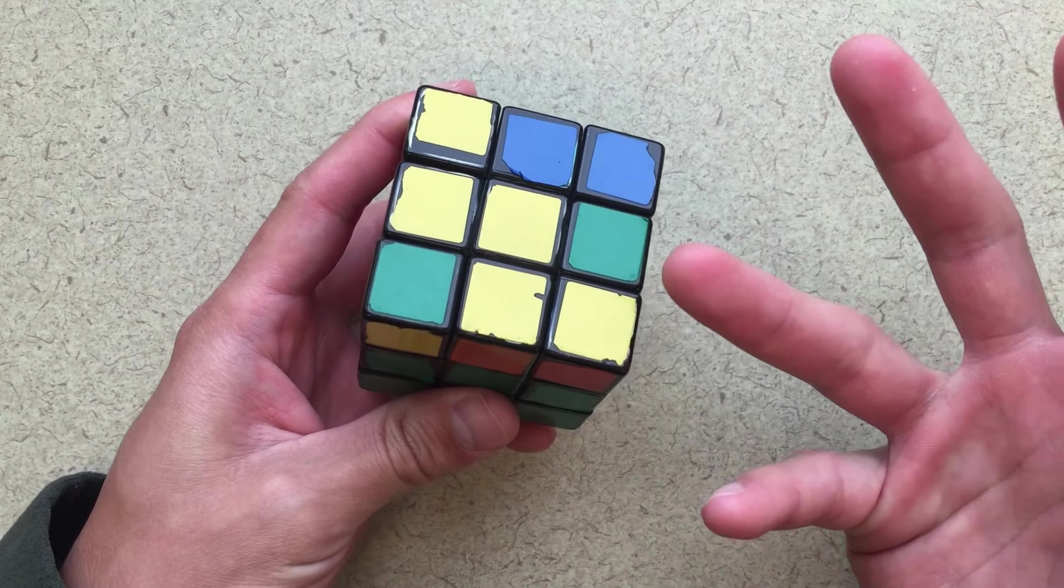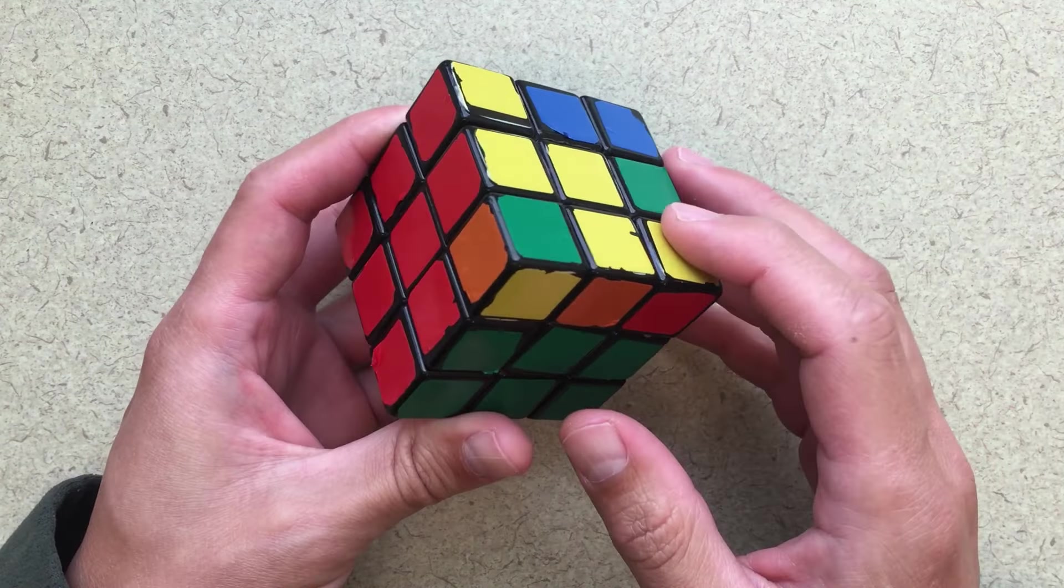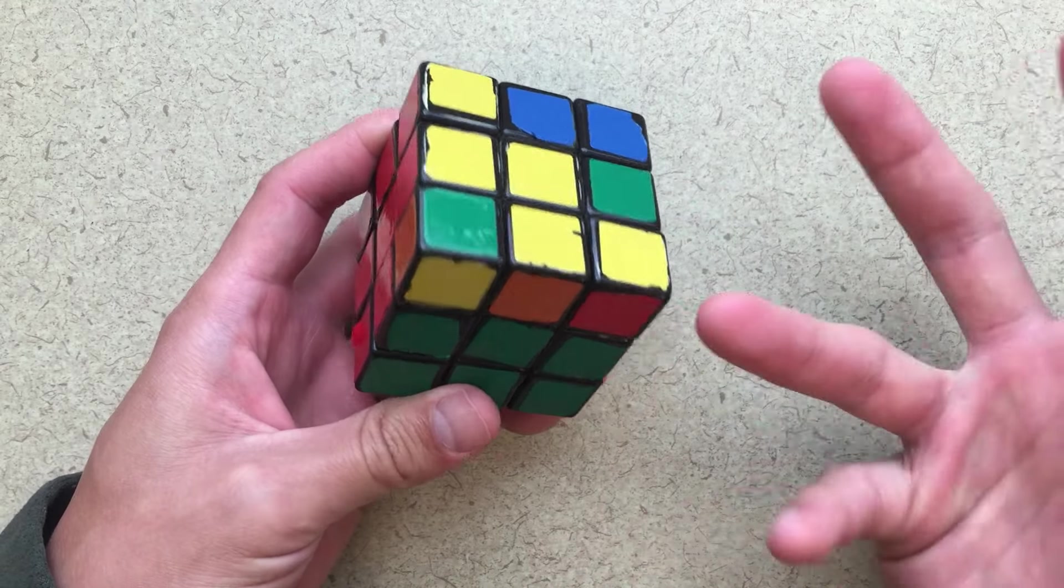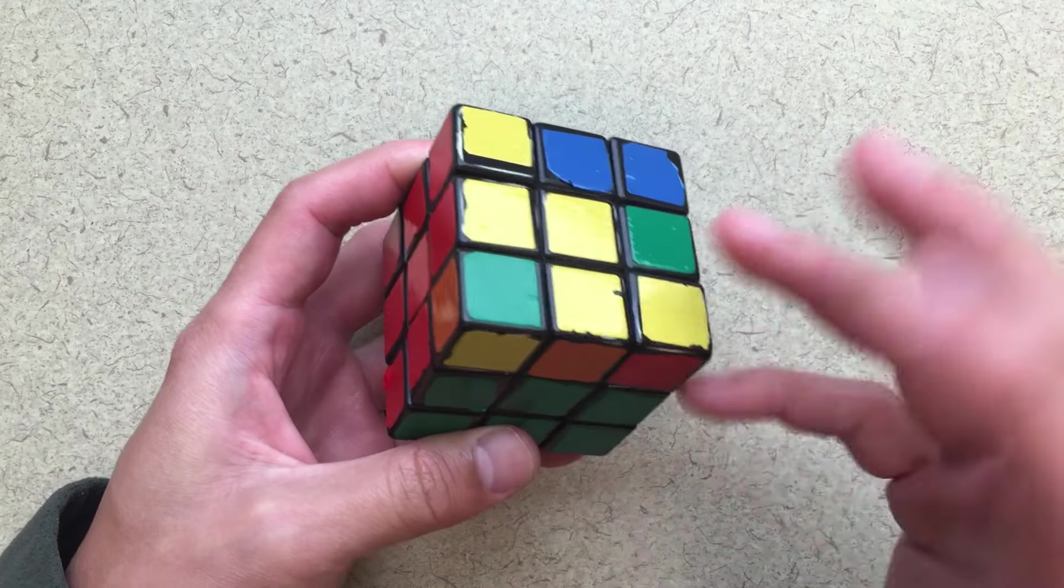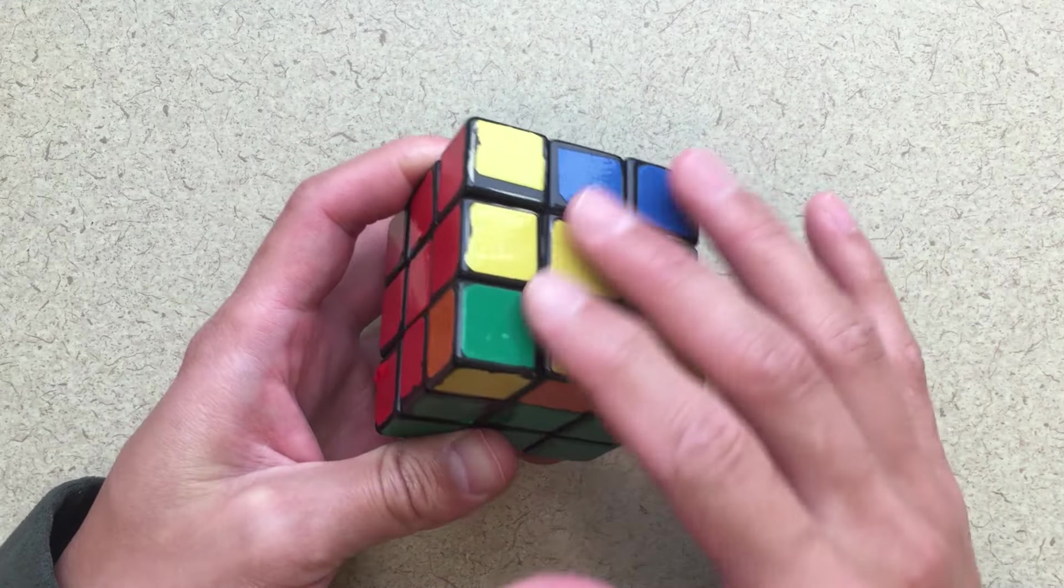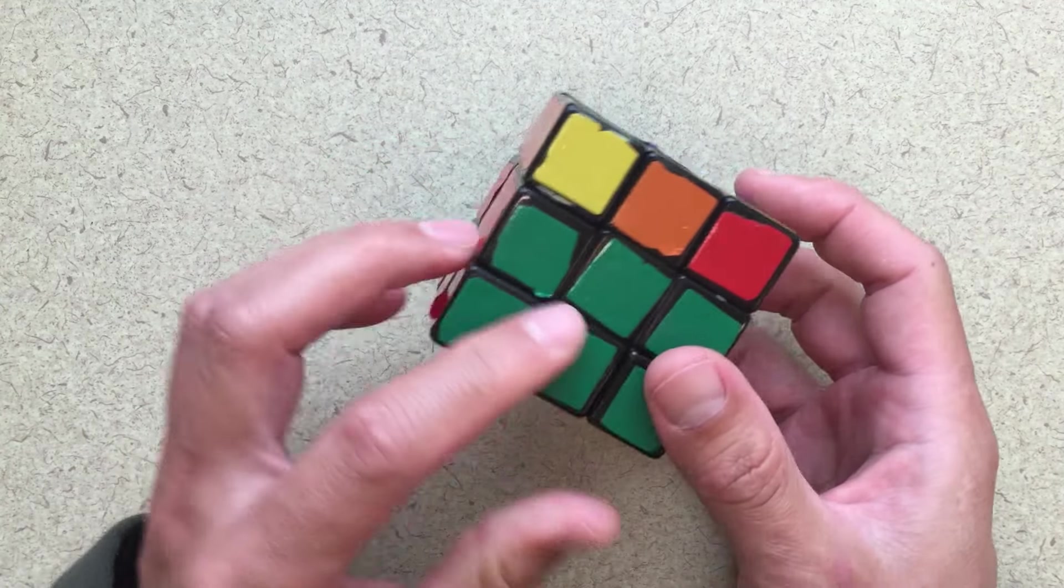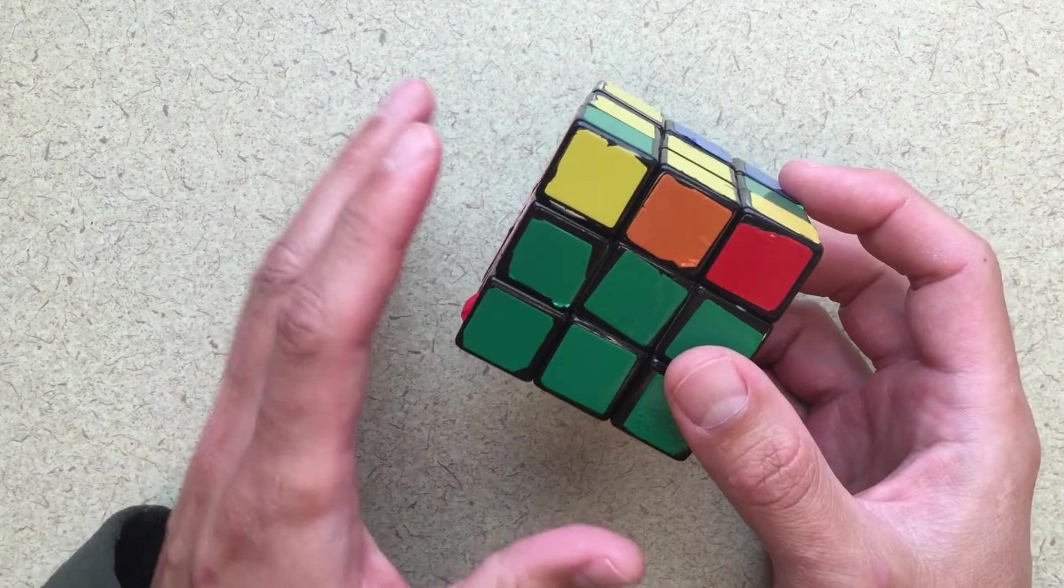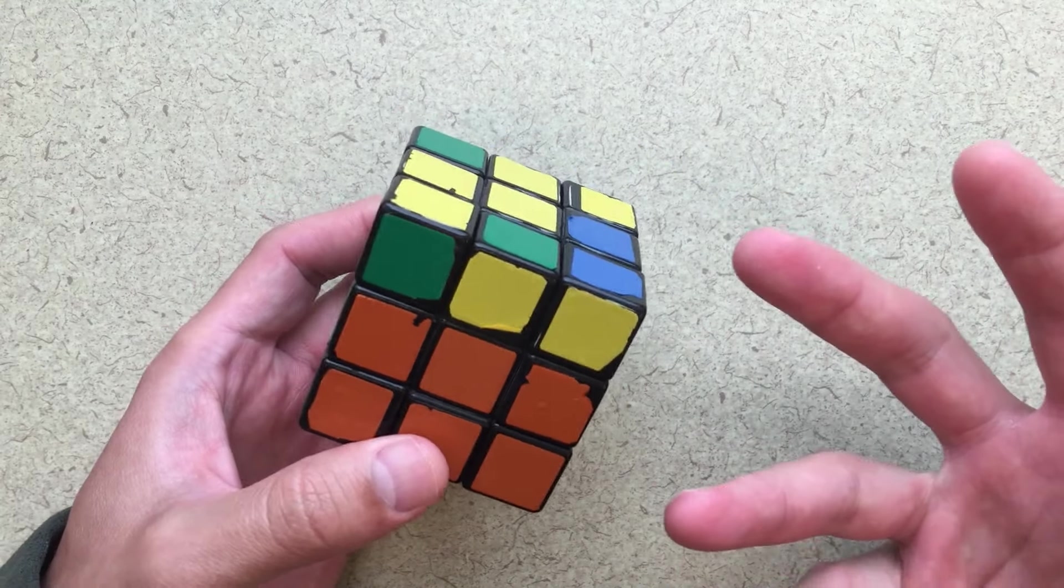So the strategy that we're going to be using here is basically we're going to do an algorithm, a set of transformations that are going to jumble around the yellow layer while leaving the bottom two layers totally fine.